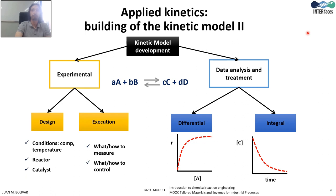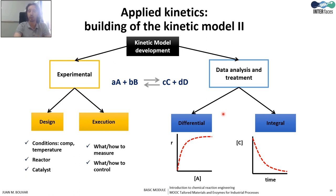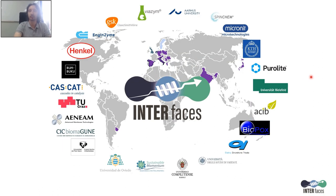To build the kinetic model, there is an intense interplay between experimental design and mathematical treatment. We modify a certain variable — like substrate concentration at a fixed temperature or pH — and measure either substrate consumption or product production over time. Mathematically we treat the data to understand whether the equation, from a mechanistic or empirical point of view, is relevant to explain our data. With this, we finish this introduction to chemical reaction engineering, which is the basis for further understanding of enzyme kinetics. Thank you.